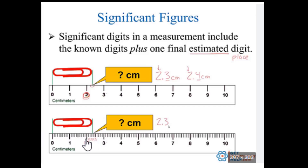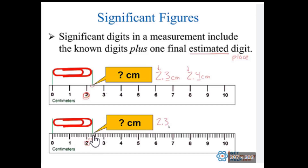Looking at the ruler, I would say that's 2.1, 2.2, 2.3. If it's right on that line, I would say 2.30. But somebody next to me might say it's a little bit above it — 2.31 centimeters. Again, that hundredths position would be an estimated place digit.